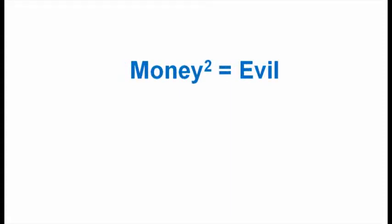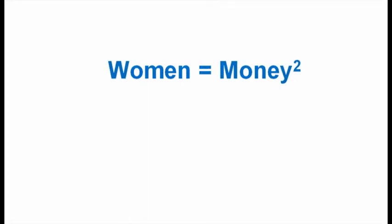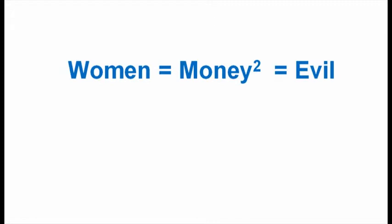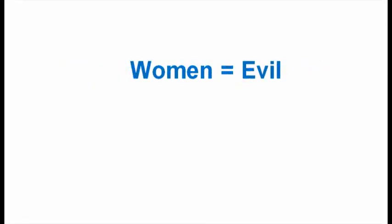Now we've shown that women equals money squared and that money squared equals evil. Then we can rewrite it as women equals money squared, money squared equals evil. But by removing money squared, we therefore mathematically prove once and for all that women are evil.